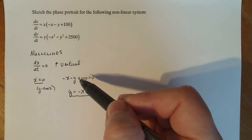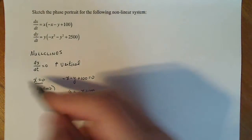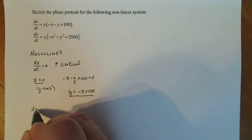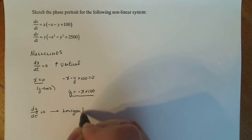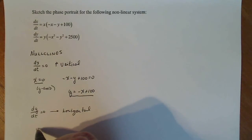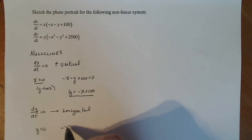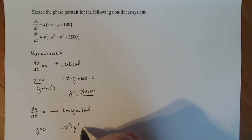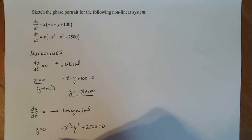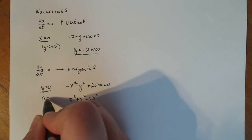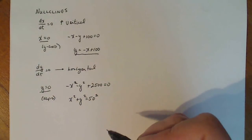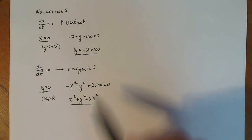Both of those nullclines have vertical marks on them. Now with dy/dt equals zero, these are going to be horizontal slope marks or vectors. So dy/dt equals zero when y equals zero, and also when minus x squared minus y squared plus 2500 equals zero, which is just a circle: x squared plus y squared equals 50 squared. So there are four nullclines altogether.